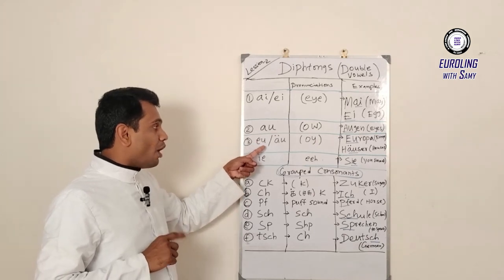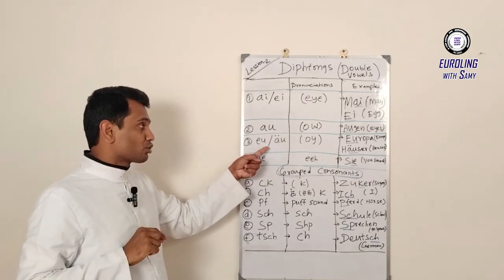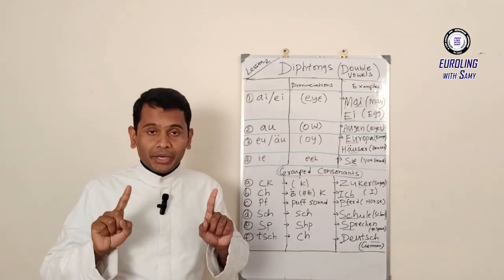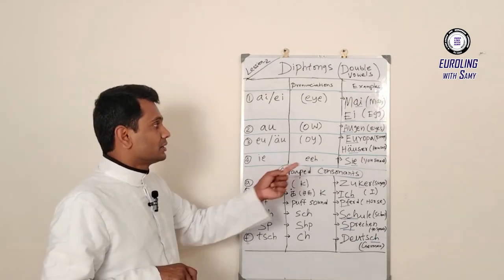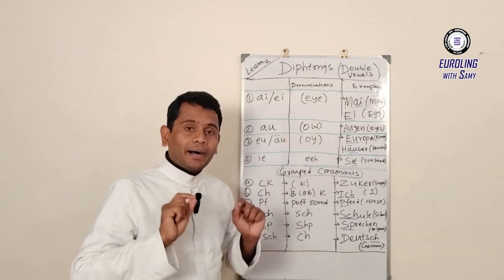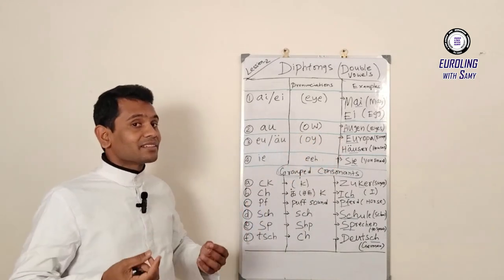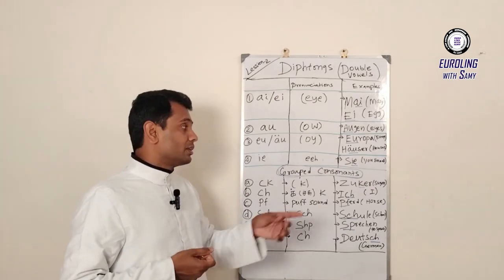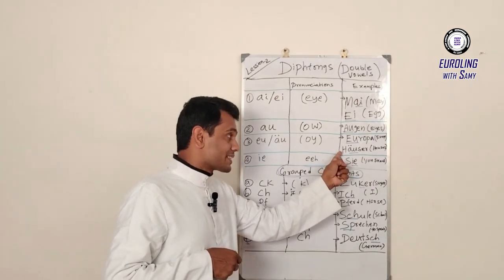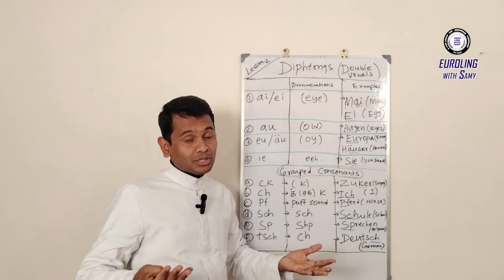The third type of double vowels, ÄU or EU. It is pronounced as OI. For example, EUROPA. EUROPA means Europe. Let's give another example. HÄUSER. HÄUSER, that means houses, plural.